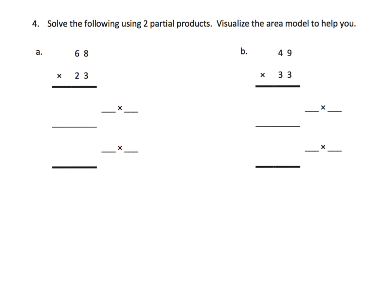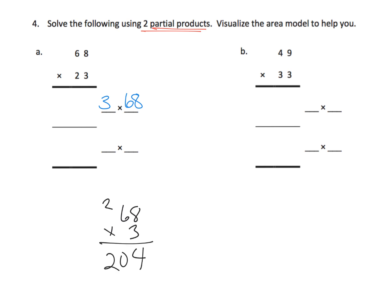Here we'll continue nudging students toward the two partial products method. For this first problem, our first partial product is going to be 3 times 68. Students may need to go down on scratch paper and do 68 times 3 to get 204.